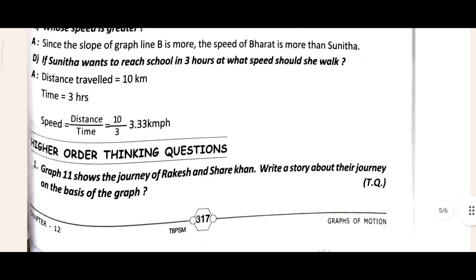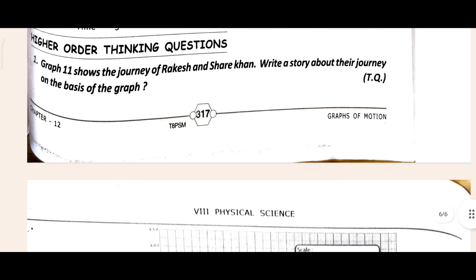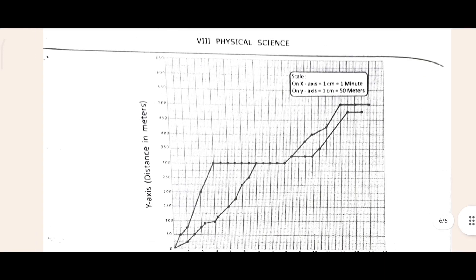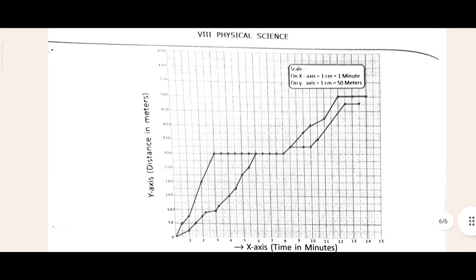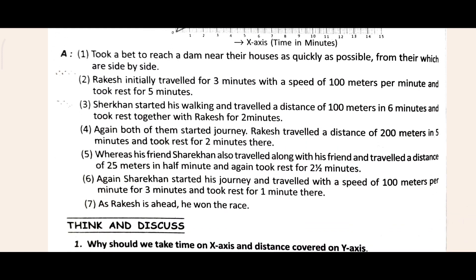Now come to the Higher Thinking question. Here is the first question — observe the graph. You can see the graph here. The y-axis is going from 50, 100, 150, 200, 250, 300, 350, 400, 450, 500, 550, 600, 650. Don't be confused about that.